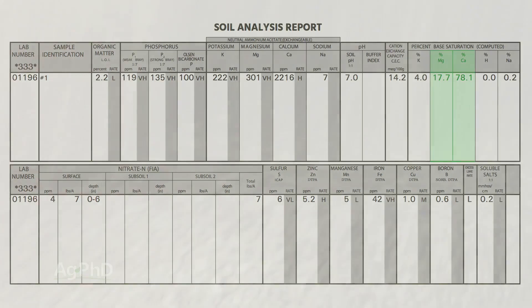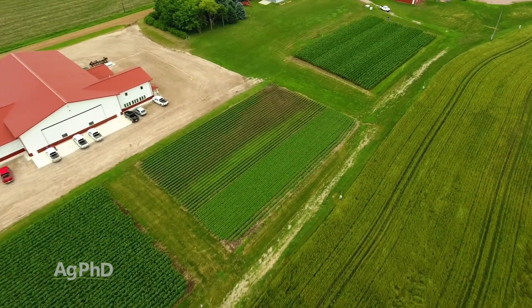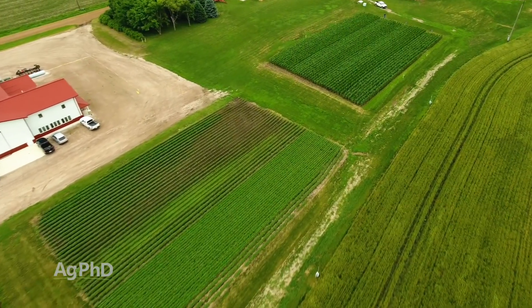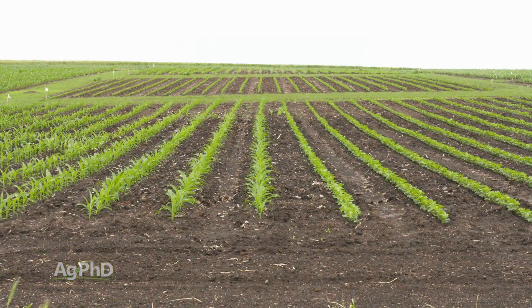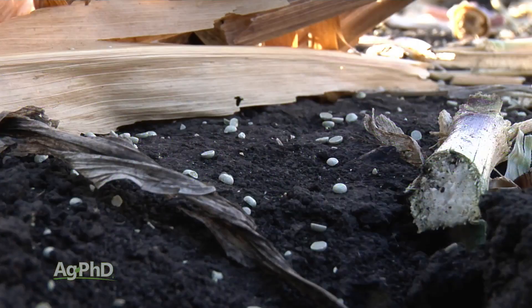With elemental sulfur, you can also lower pH pretty quickly. At our Ag PhD Field Day site, we had David Hula — the world record corn producer — on our farm. He took a low 7's pH all the way down to 5.1 in just a few months with the use of elemental sulfur. The key with elemental sulfur, just like when we talk about lime, is very, very small particle size. The smaller the particle, the faster the pH change, and the more permanent that change can be — as long as you've taken care of the other soil factors that caused your pH to go high in the first place.